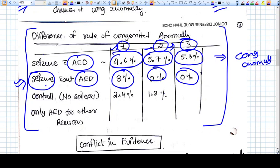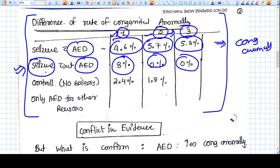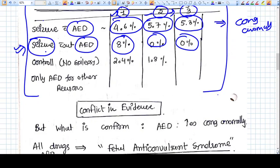What you need to understand is a pregnant lady with seizure disorder has higher chances of congenital anomaly. But a pregnant lady with seizure disorder on anti-epileptic drugs has still higher, more higher chances of congenital anomaly. This is the crux of the studies.